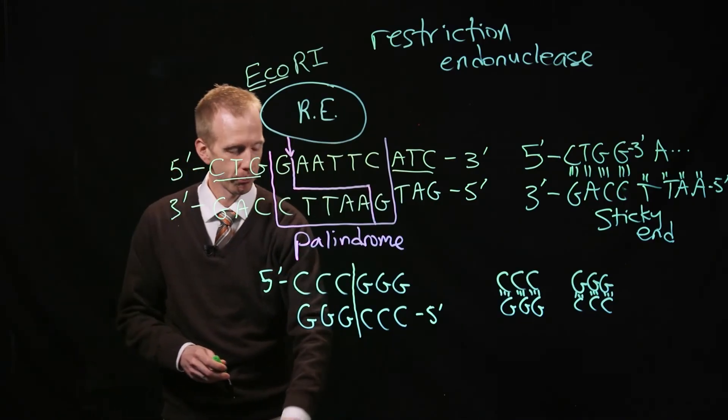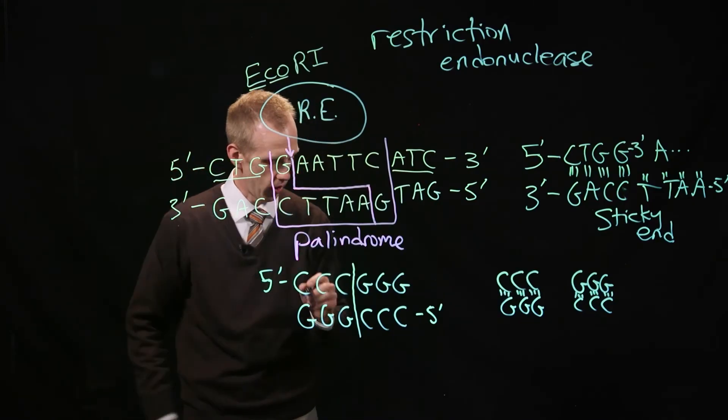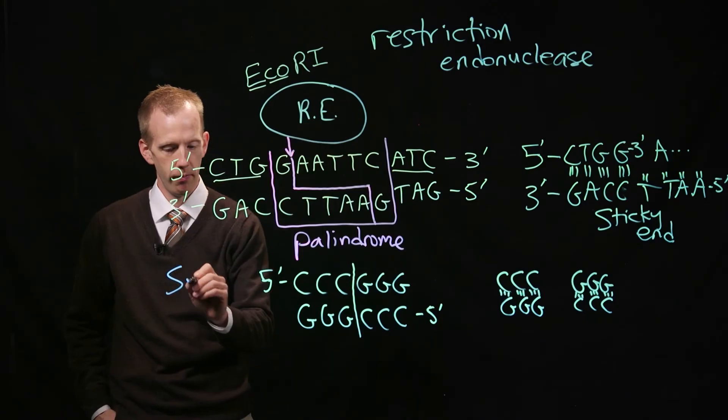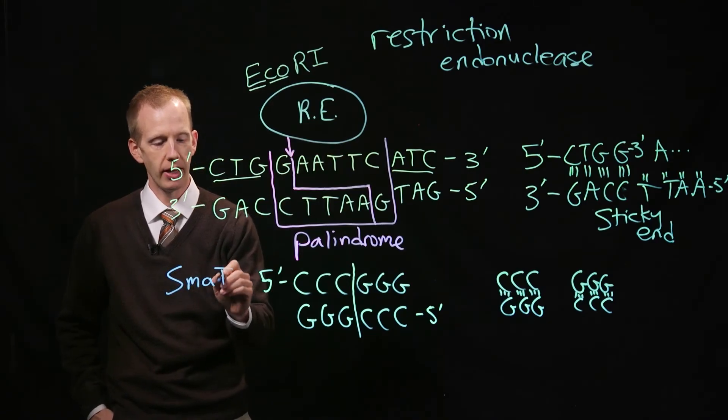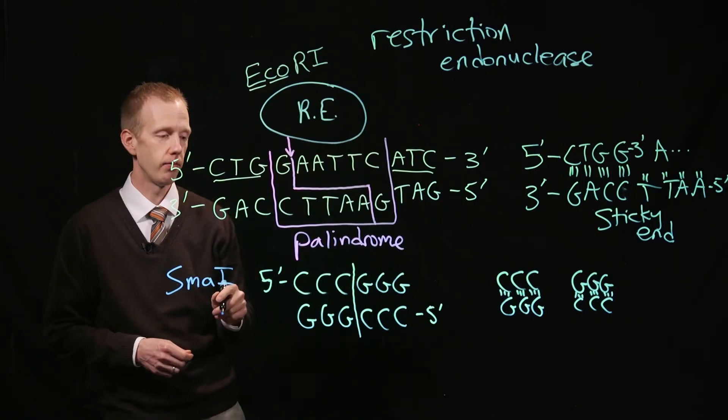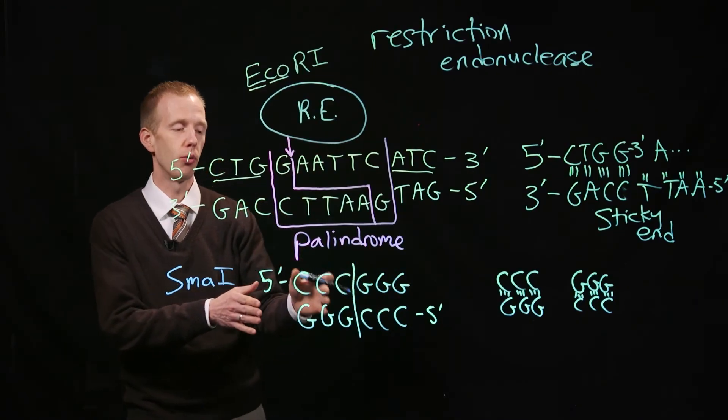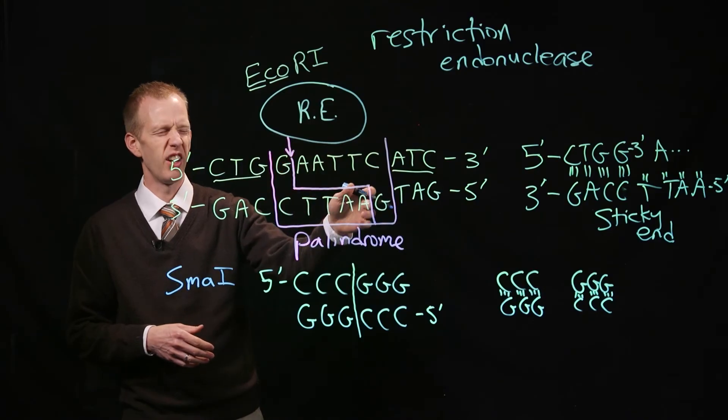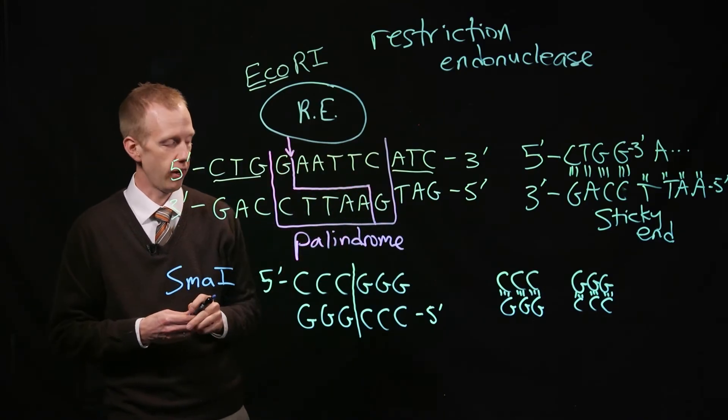This enzyme is called SMA1. It's from a bacterium called Serratia marcescens, and it makes a blunt cut. It still recognizes six nucleotides, it's a palindrome, but it's a blunt cutter, not an offset or sticky end cutter.